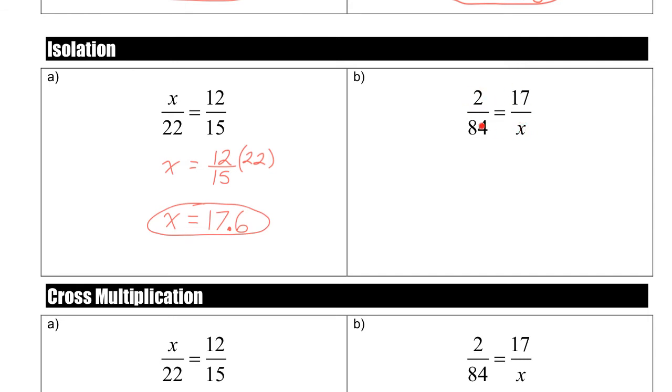So we can just change this. We can flip this fraction around and flip this fraction around. As long as we do the same thing to both sides of the equation, then it's still equal. We can still work with it. So we end up with 84 over 2 equals x over 17. Now we can do what we did before and just multiply by 17. So x is equal to 84 divided by 2 times 17. If you do that in your calculator, you end up with 714.